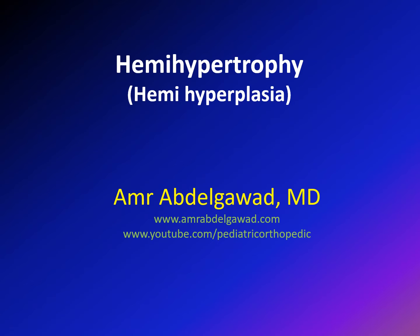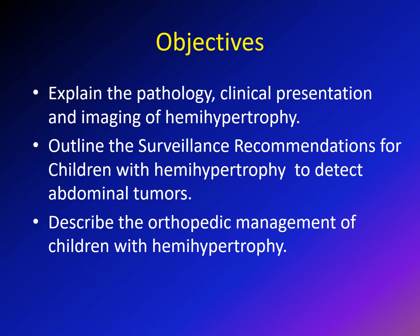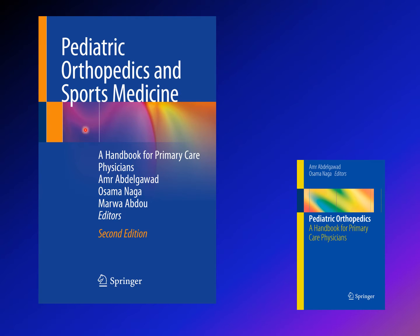This lecture is about hemihypertrophy, sometimes known in the literature as hemihyperplasia. The objectives of this lecture are to explain the pathology, clinical presentation, and imaging of hemihypertrophy, and to discuss the surveillance recommendation for children with hemihypertrophy to detect abdominal tumors, and the orthopedic management of children with hemihypertrophy. A good source for pediatric orthopedic and sport medicine is a book written by myself, Dr. Naga, and Dr. Abdu.